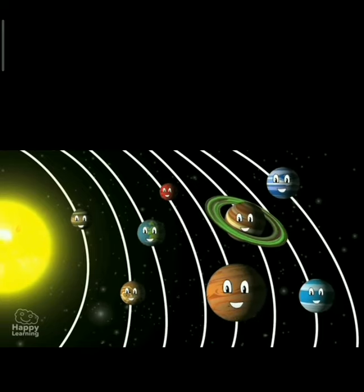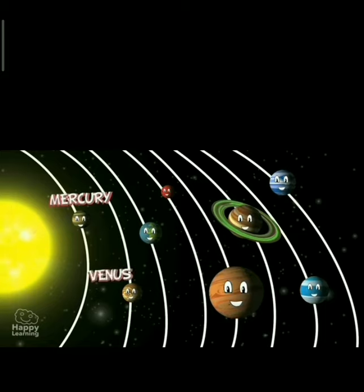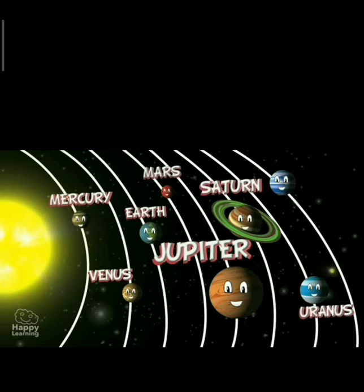So, in the solar system how many planets are there? In the solar system there are 8 planets. Pluto was considered a dwarf planet.